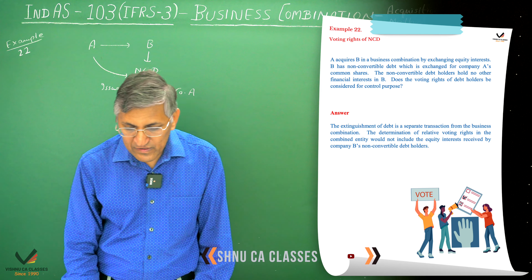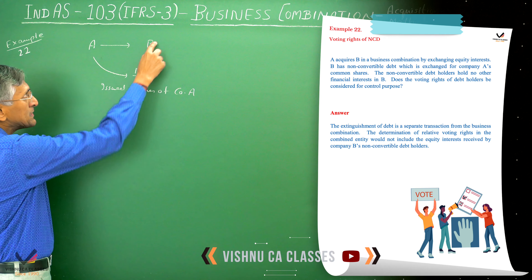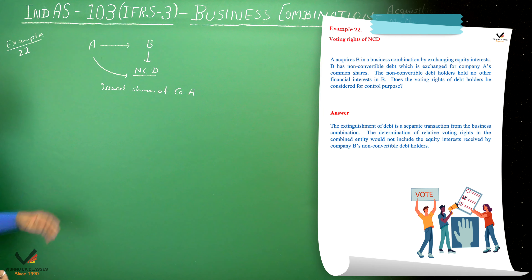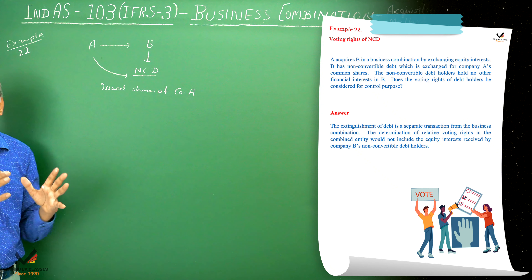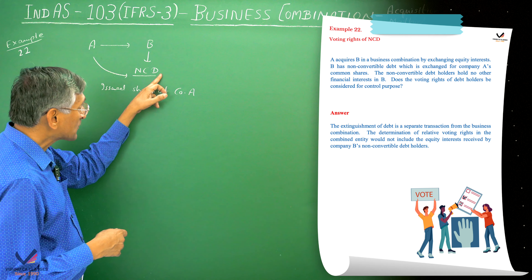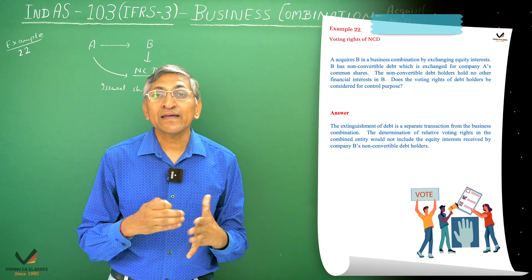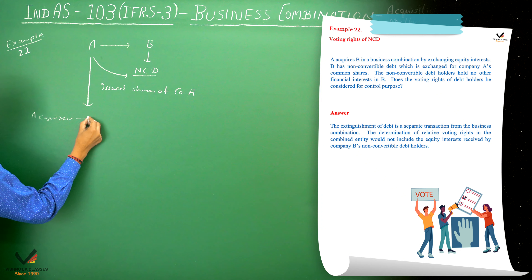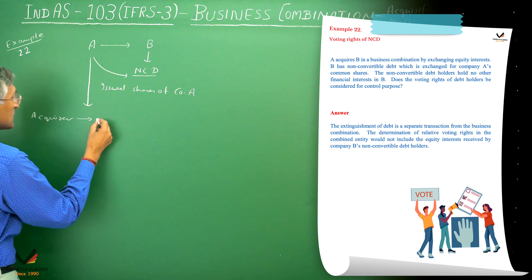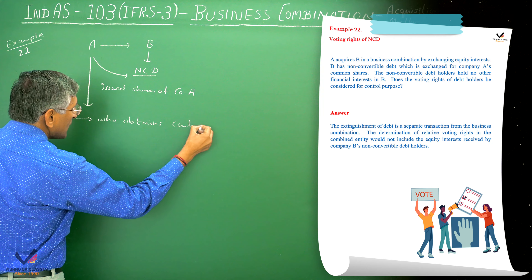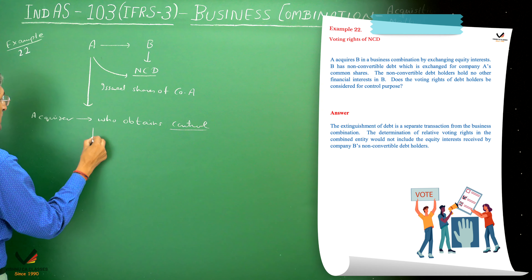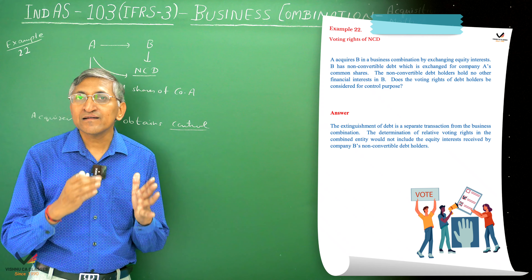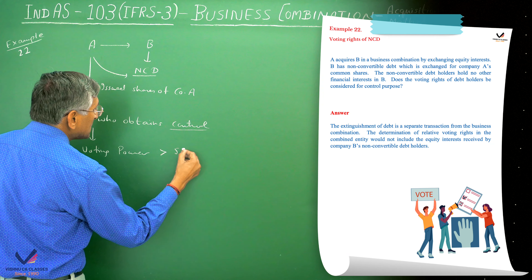The non-convertible debenture holders hold no other financial interest in B and they have no equity in B company. So the voting rights of debenture holders will be considered for control purpose. When we determine who is the acquirer, the acquirer is that entity which acquires control — that is, who obtains control. We check control through voting power, and the entity which has voting power of more than 50% has the control.